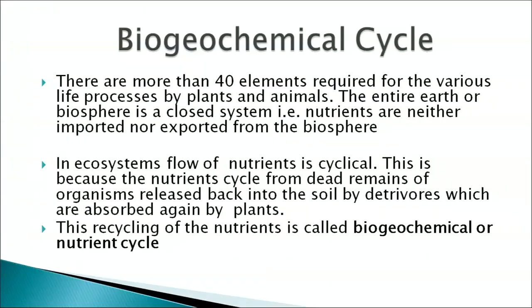We have studied energy flow and food through the various trophic levels. In nature, all biospheres have an input of energy, whereas nutrients in an ecosystem are limited. More than 40 elements are required for various life processes. The biosphere is a closed system with respect to nutrients — neither imported nor exported. In the ecosystem, the flow of nutrients is cyclical, as nutrients from dead organisms are released back into the soil by detritivores and decomposers, absorbed again by plants, and reutilized. This recycling is called the biogeochemical cycle or nutrient cycle.